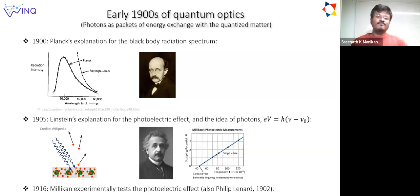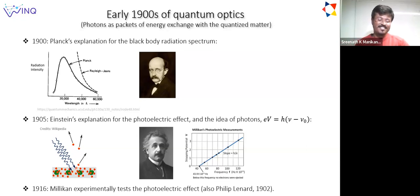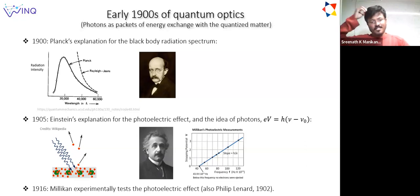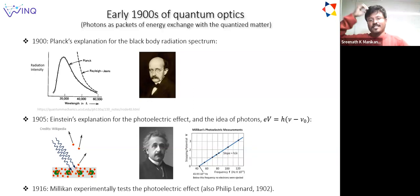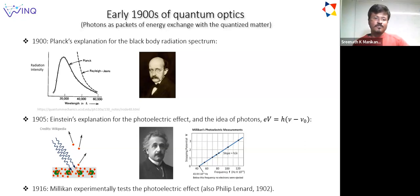Concurrently, Einstein was also very much pursuing this high frequency behavior of light. He was independently thinking—for example from the experimental data of the blackbody radiation spectrum—he could compute the entropy. This was also suggesting the discrete nature of light.